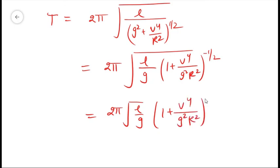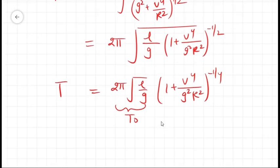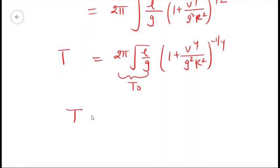This is our T₀. So the answer by rough calculation turns out to be T₀ × (1 + v⁴/(g²r²))^(-1/4).